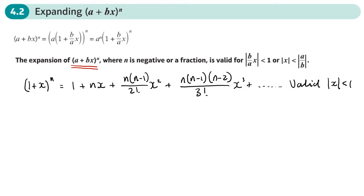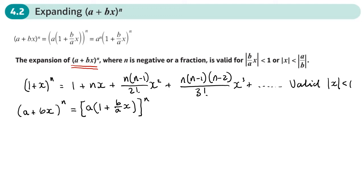What if it's something different like 2 + x, or 3 + x, or 4 + x? If we're trying to expand (a + bx) to the power n, what we do is factorize the a out so we end up with 1 plus something. So I take the a out of the bracket and get 1 + (b/a)x, and all of that gets raised to the power n. Using the rules of powers, this becomes a^n times (1 + (b/a)x)^n.